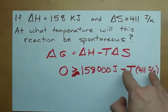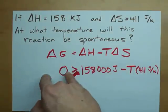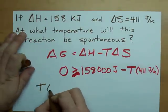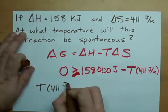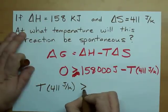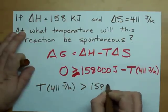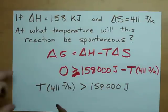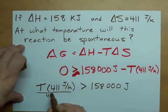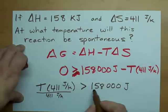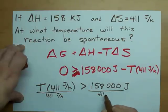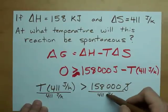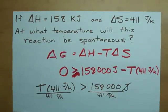And all you have to do is solve this equation for T. I'm going to move my T times 411 to the other side of my equals sign here. T times 411 joules per Kelvin, 158,000 joules. How do you undo this multiplication? You divide both sides by 411 joules per Kelvin. Now what I want to point out here is that on this side joules cancels with joules and you're left with Kelvin as an answer.